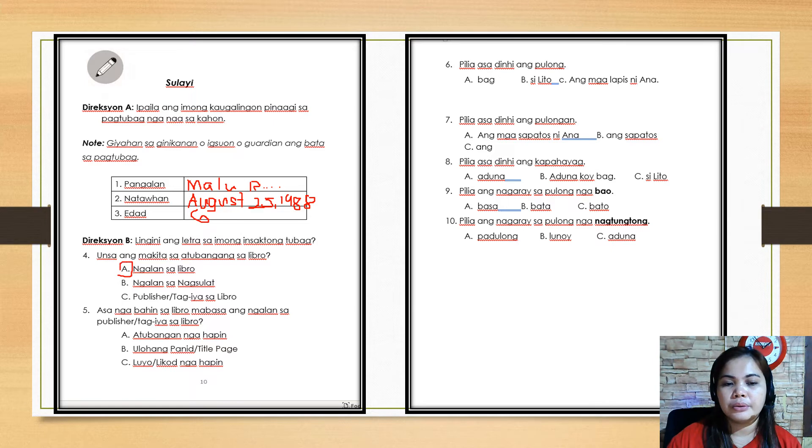So you choose your correct answer and then encircle it. For example, my correct answer is letter A. But it doesn't mean the answer is letter A. Next number five: which part of the book can we see the name of the publisher or the owner of the book?